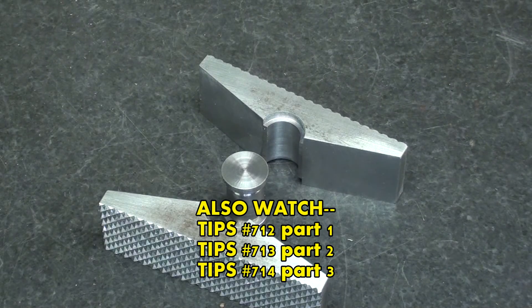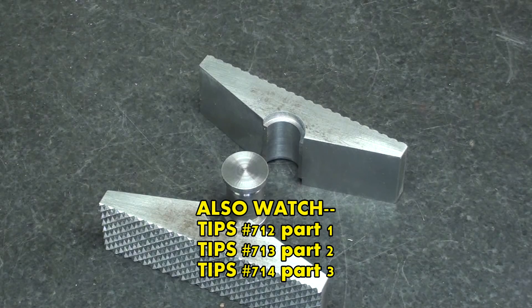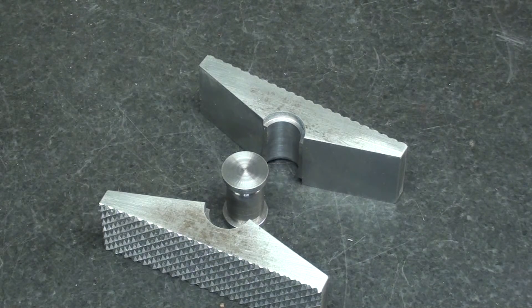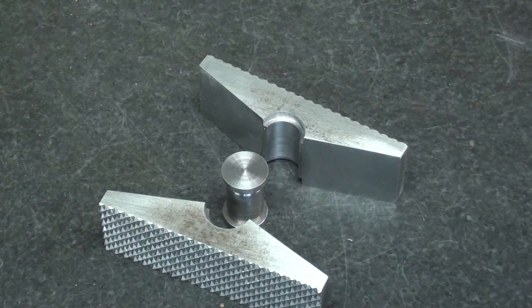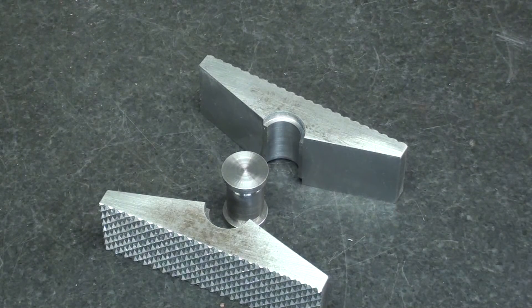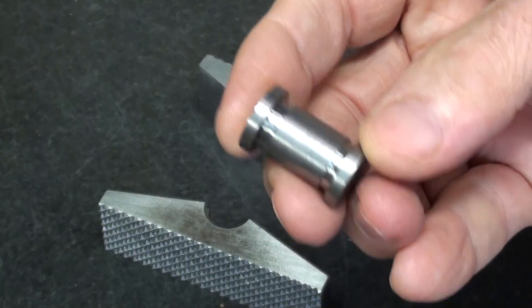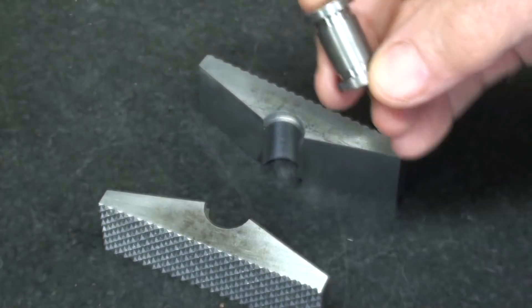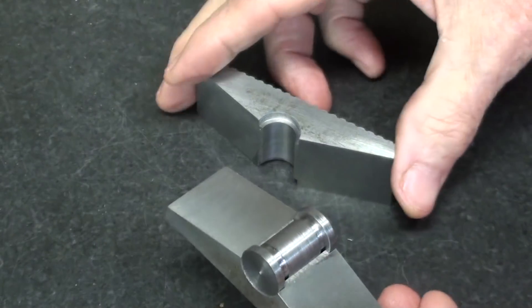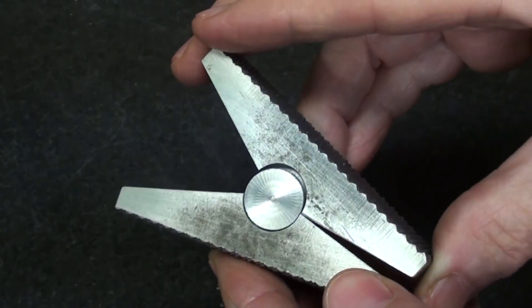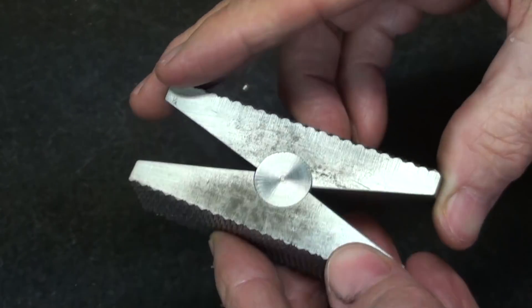Howdy again, it's Mr. Pete, and this is tips number 715, which is part four, the final part of this four-part series on making a set of swivel jaws for a vice. And today we'll concentrate on making this relatively simple part, the pin that holds the two together, or should I say separates them and allows them to swivel or swing.